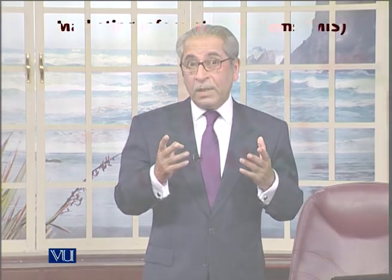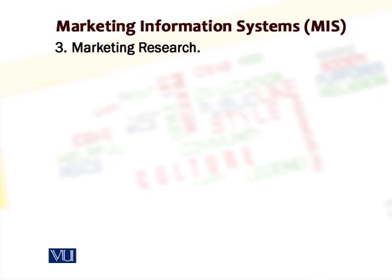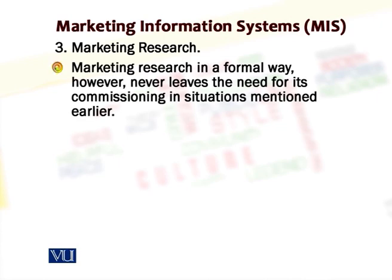The third system is what we already know, and that is the marketing research system. Marketing research, although being an expensive activity, may not leave us in totality — so in other words, there are situations in which we have to count on marketing research. We have to go back to marketing research and carry out some level of research, whether qualitative or quantitative, because there are situations which are to be established in absolute certainty only through research findings.